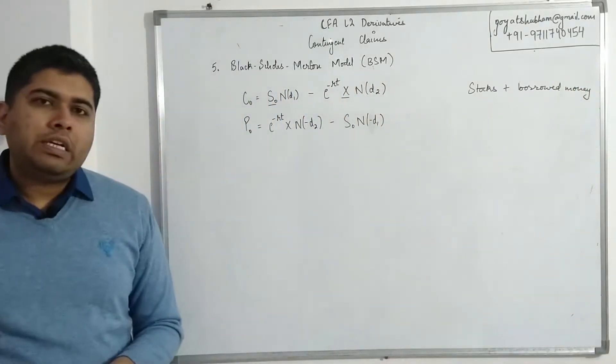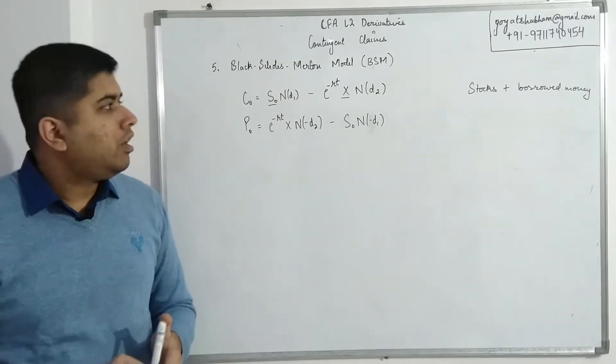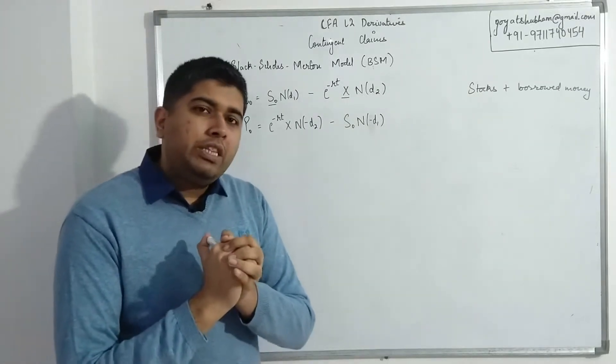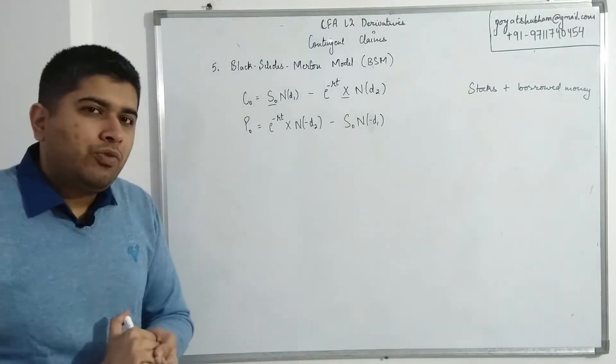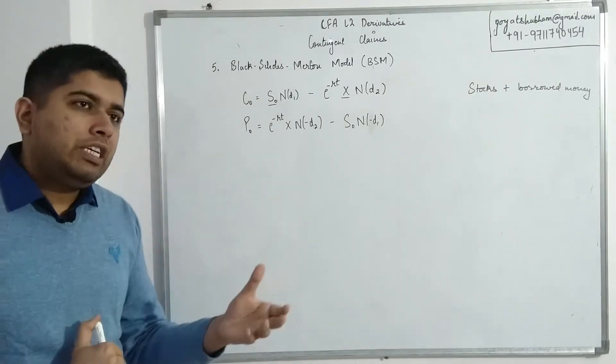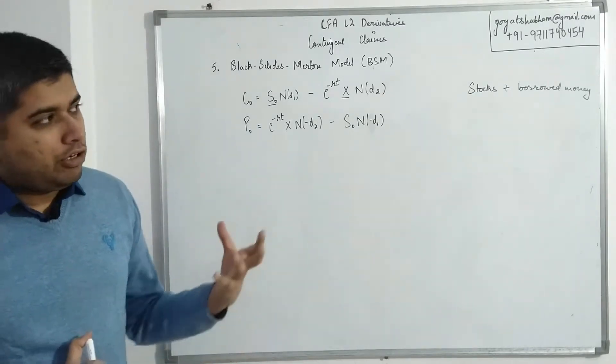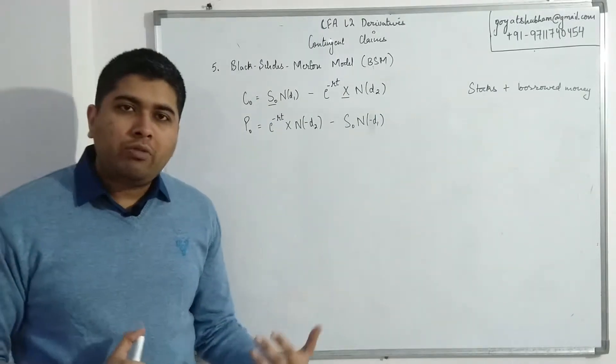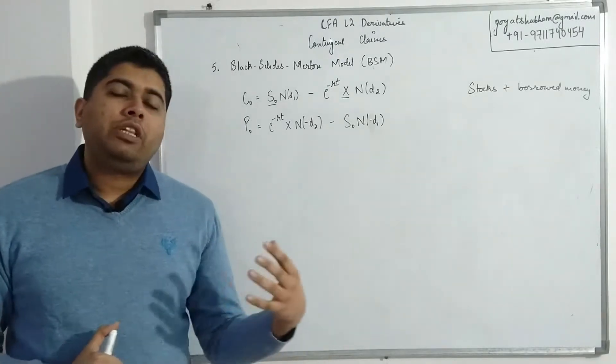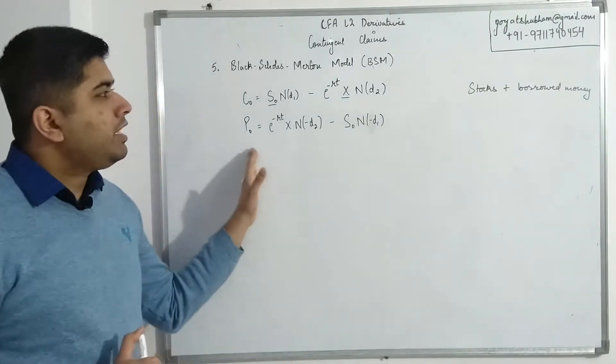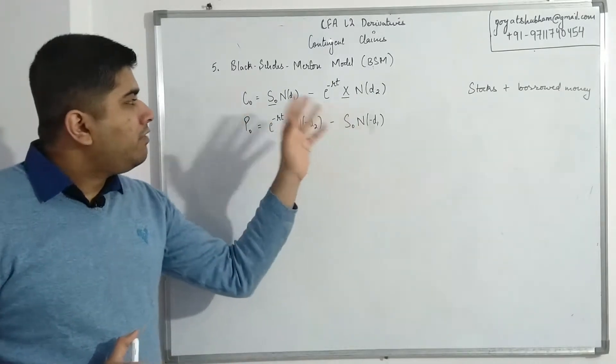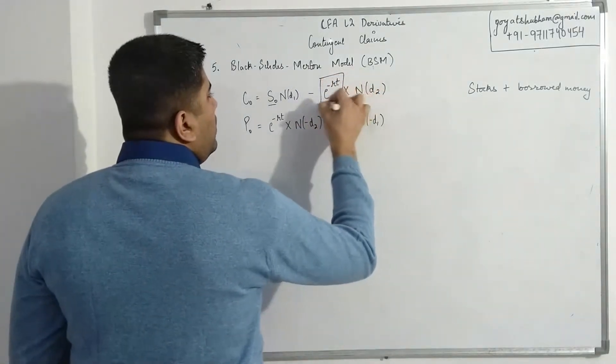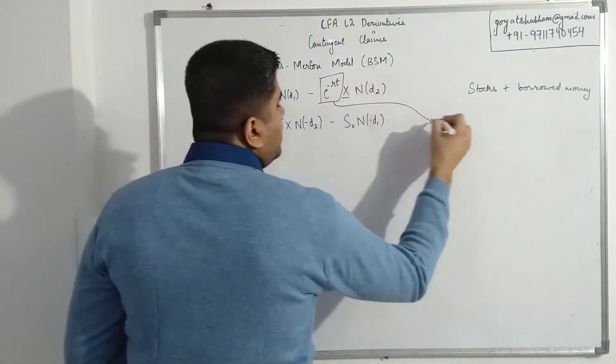Basically this model says that a call option can be replicated by way of buying stocks—stocks with borrowed money. Some people might get confused and they might think how is this replicating call. It will all make sense if you remember in the last reading we looked at a topic focused on how we use arbitrage in the case of binomial model. Over there, in order to do the arbitrage, we had to buy the stock and we also had to borrow whatever money was needed, and the missing element was the call option itself. It's pretty much the same thing here.